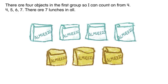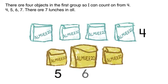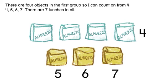There are four objects in the first group, so I can count on from four. Four, five, six, seven. There are seven lunches in all.